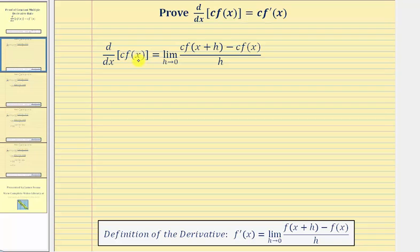if we apply the limit definition of the derivative to c times f of x, we would have the limit as h approaches zero of c times f of the quantity x plus h minus c times f of x, all divided by h.